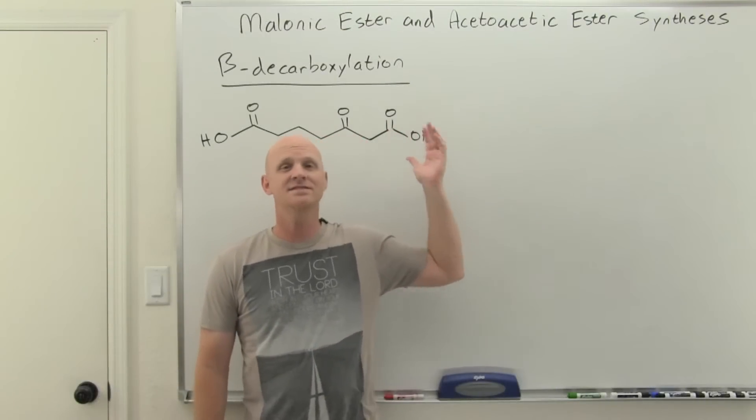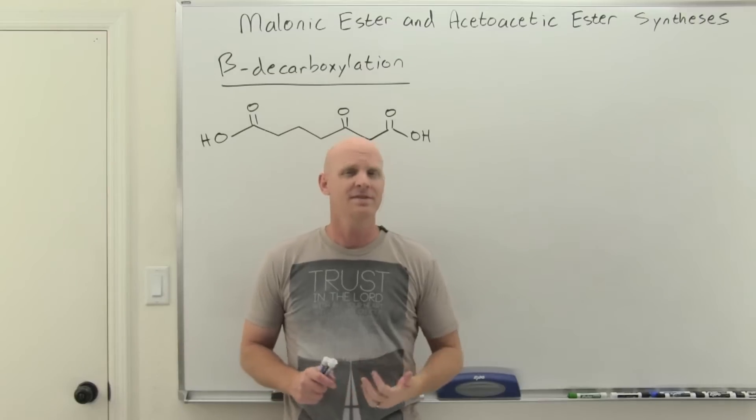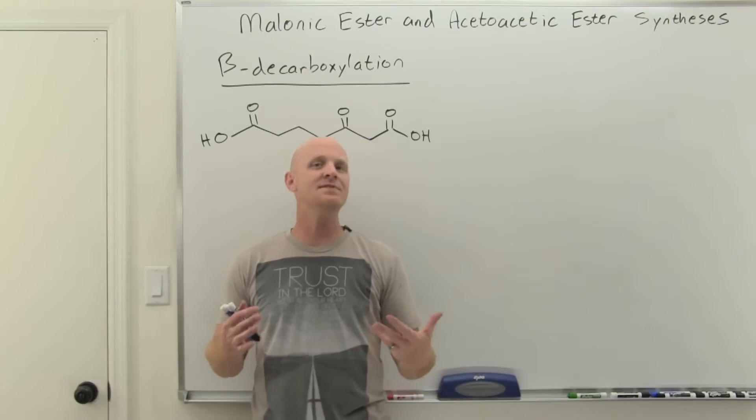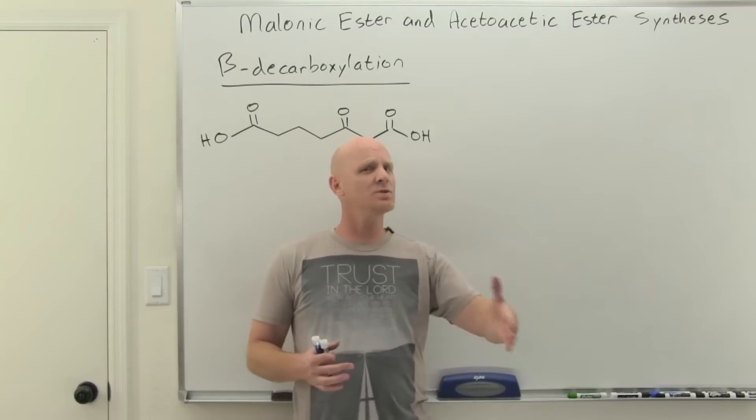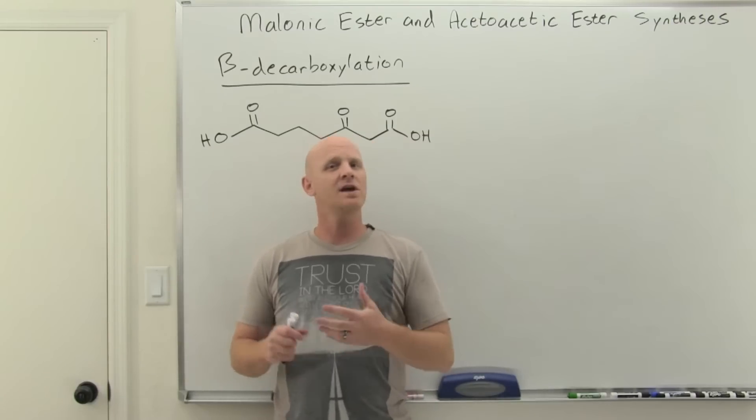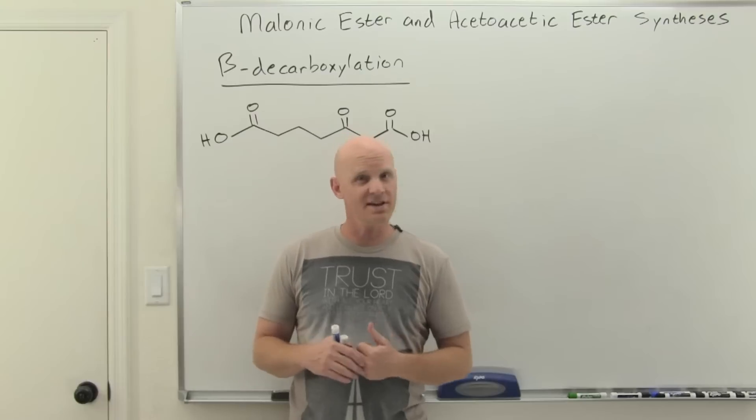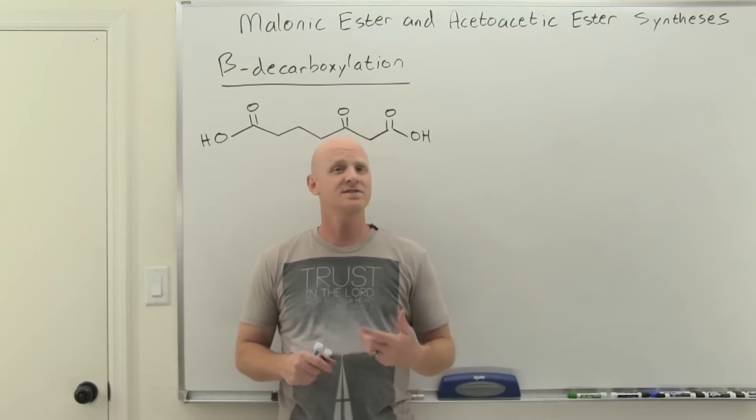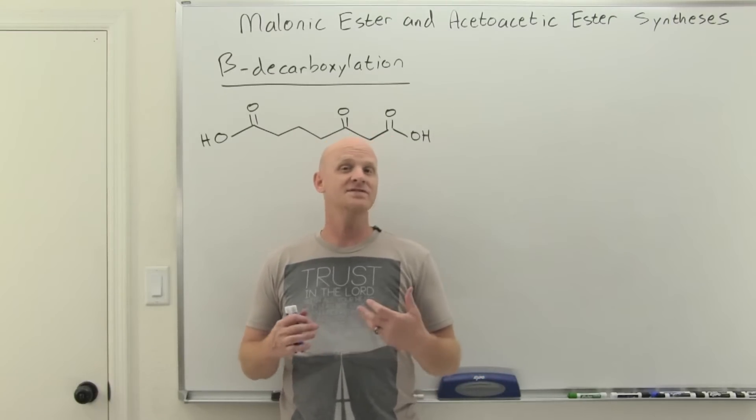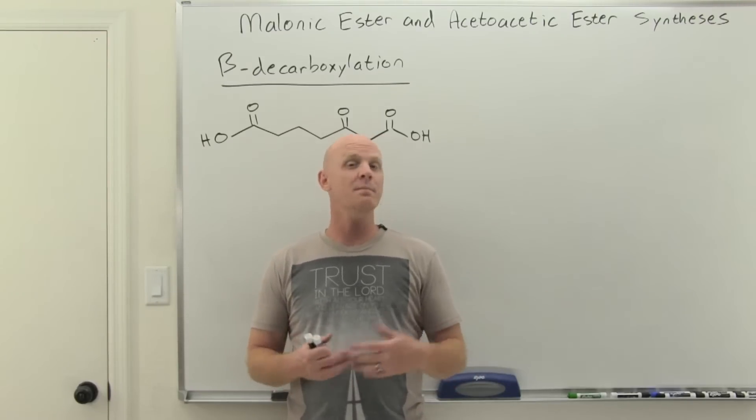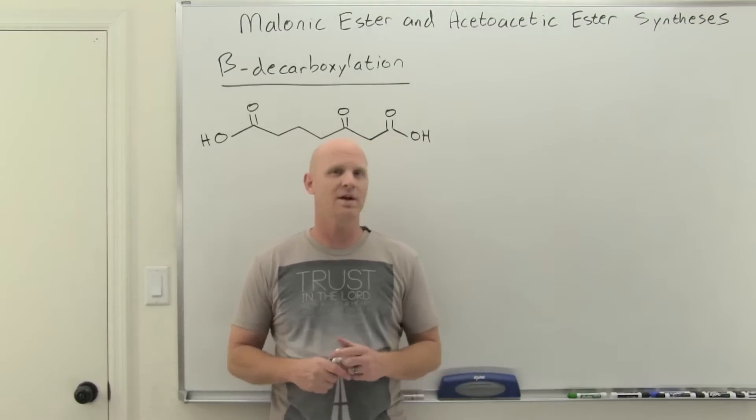The Malonic Ester Synthesis and the Acetoacetic Ester Synthesis are both examples of template synthesis, where they make a very similar product every time. The Malonic Ester Synthesis creates a substituted acetic acid, whereas the Acetoacetic Ester makes a substituted acetone, or some version of a methyl ketone.